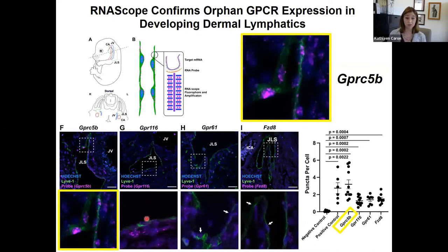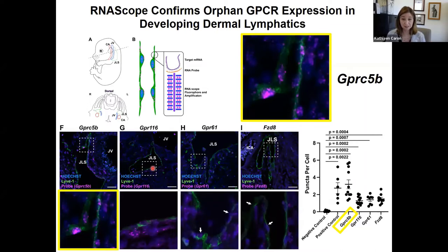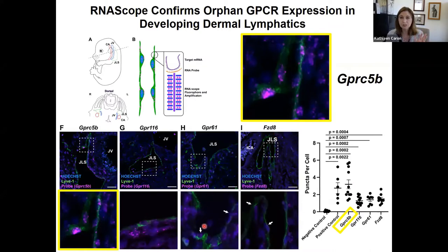GPR116 was also expressed fairly well in developing lymphatic endothelial cells, with puncta visible in the green jugular lymph sacs. However, GPR61 was expressed at pretty low levels, as was Frizzled 8 — we occasionally saw a punctum here or there, but not robust expression.